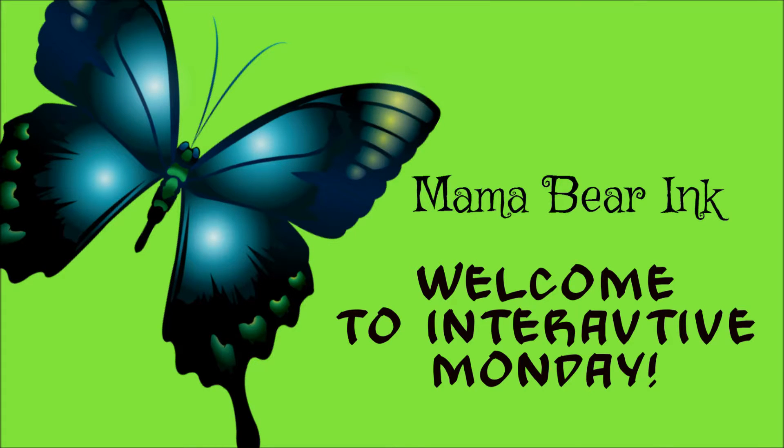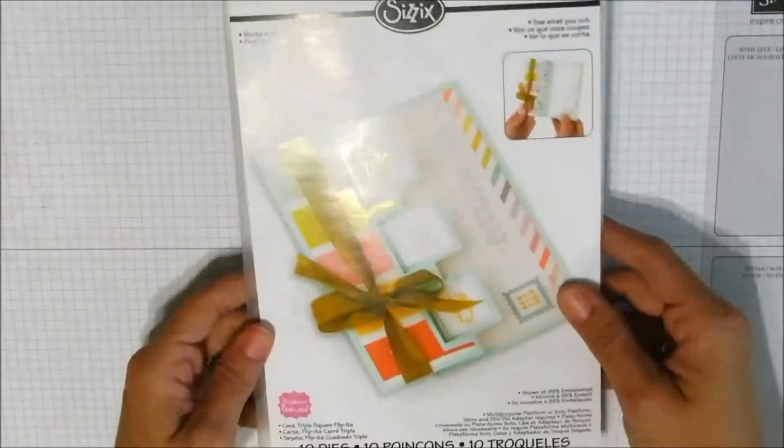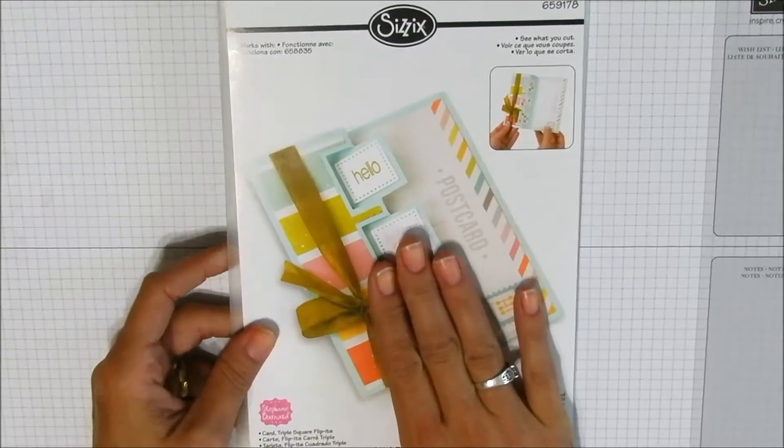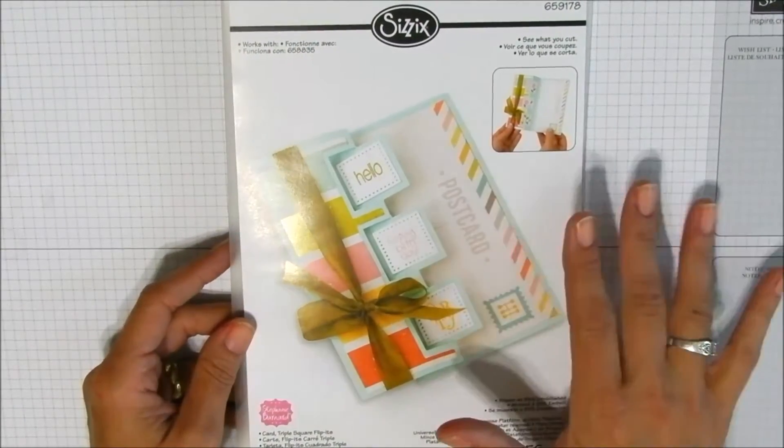Today we are going to be making a card with a brand new Flip It's die set that I just received. I ordered this on Blitzy and used a 40% off coupon from Hobby Lobby so I got it for a really good deal.